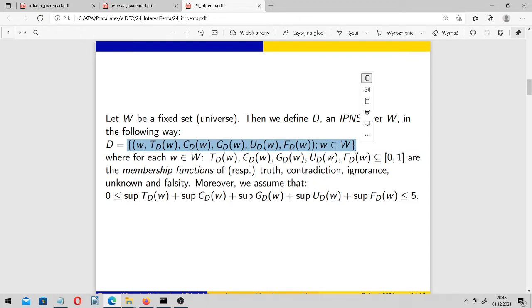As you can see, it consists of such six tuples where each tuple consists of small w, the element of our universe, and its element. This element has five functions, five membership functions evaluated for it, where each function's values are not numbers but intervals. These functions represent truth, contradiction, ignorance, unknown, and falsity, but of course you may find different interpretations, economical or philosophical.